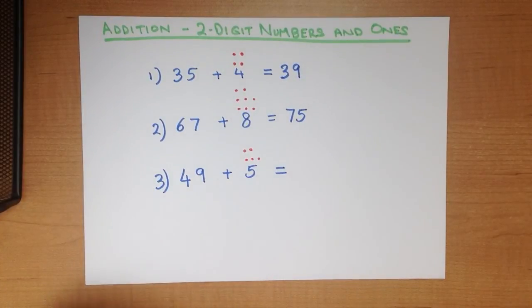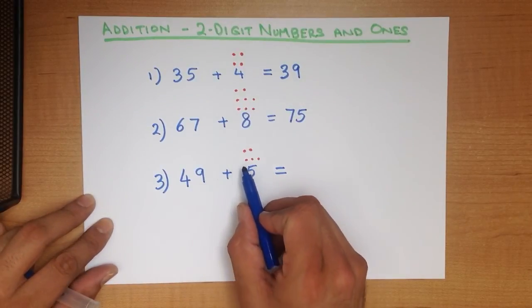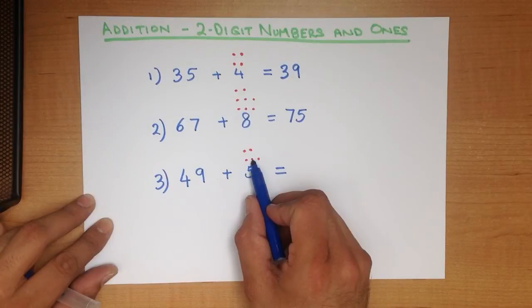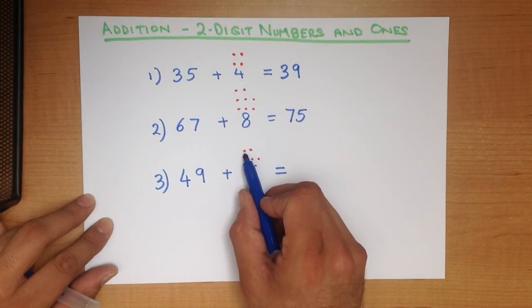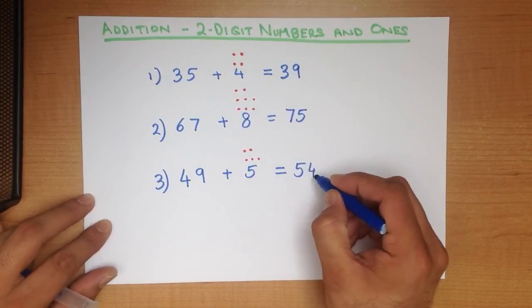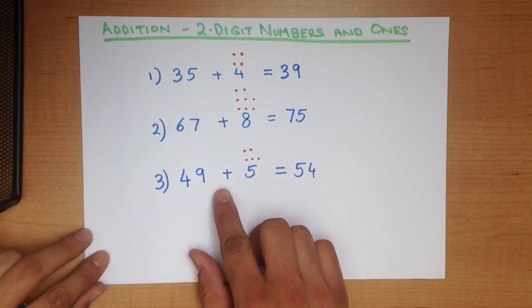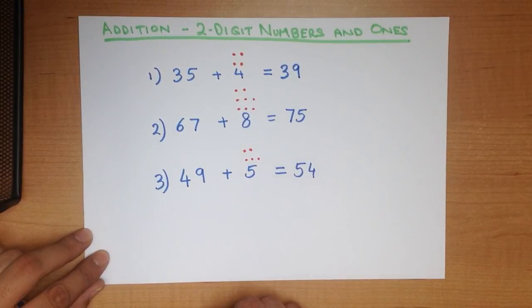And what we do is we count up from the first number, 49. So it's 49, 50, 51, 52, 53, 54. And that is our answer, 54. 49 plus 5 equals 54. And that is addition of two digit numbers and ones using the dot method.